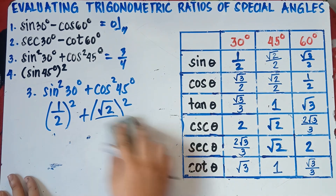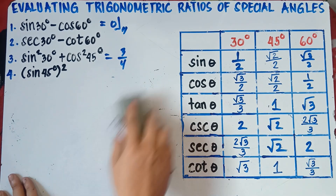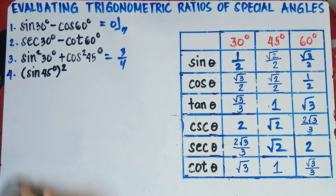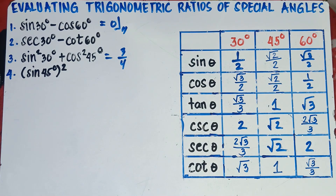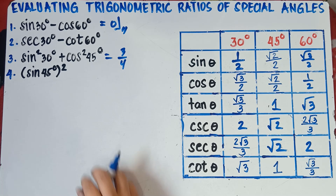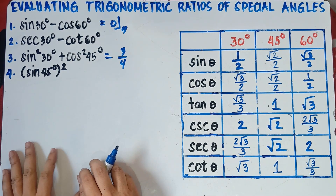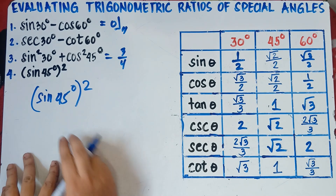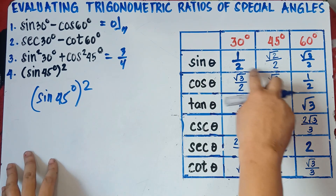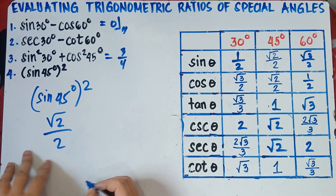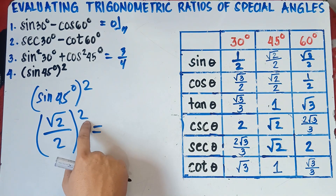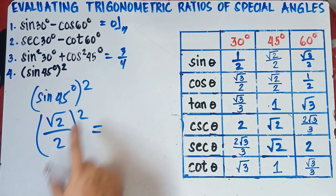Let's have number 4: (sine 45 degrees) squared. The value of sine 45 degrees is √2 over 2, then squared. So we have (√2/2)². Do not multiply by 2 — it means you multiply the expression by itself twice.